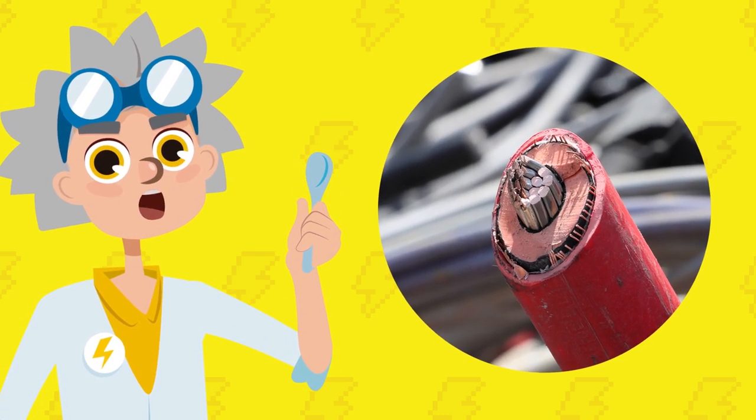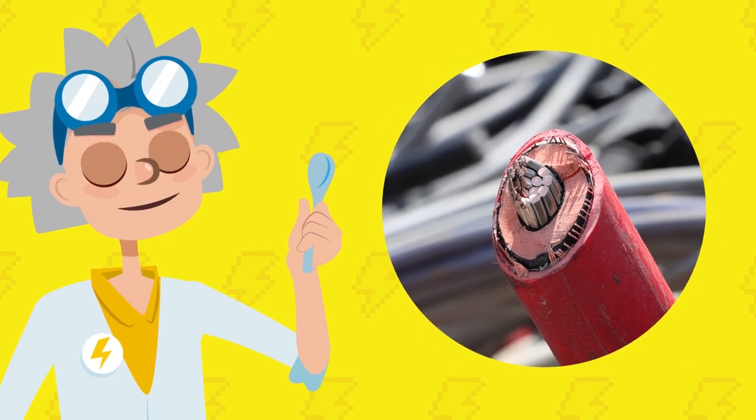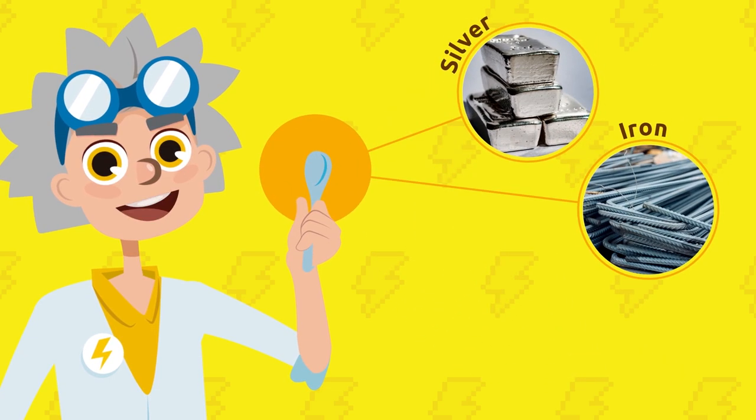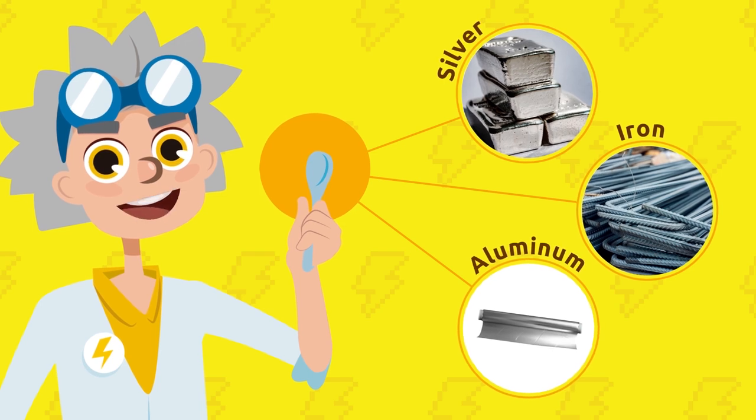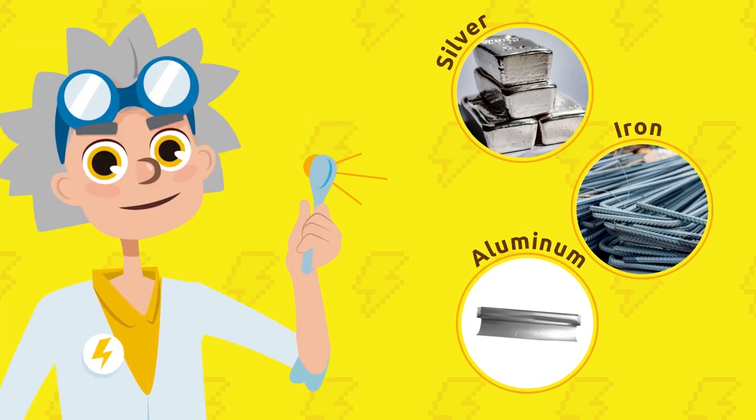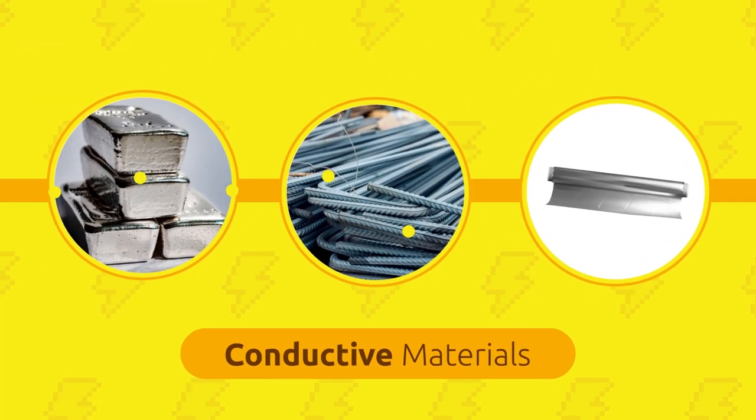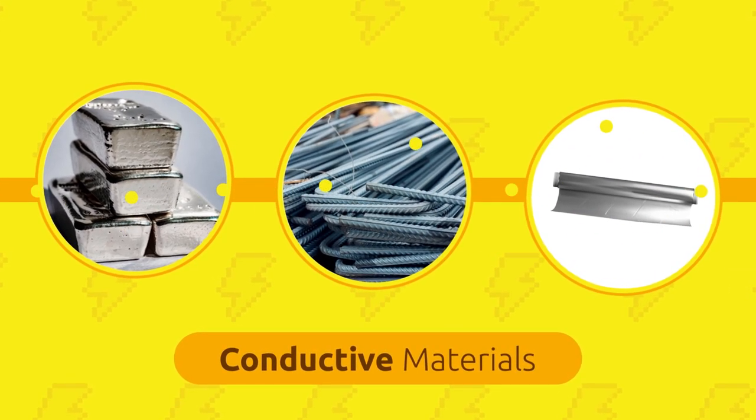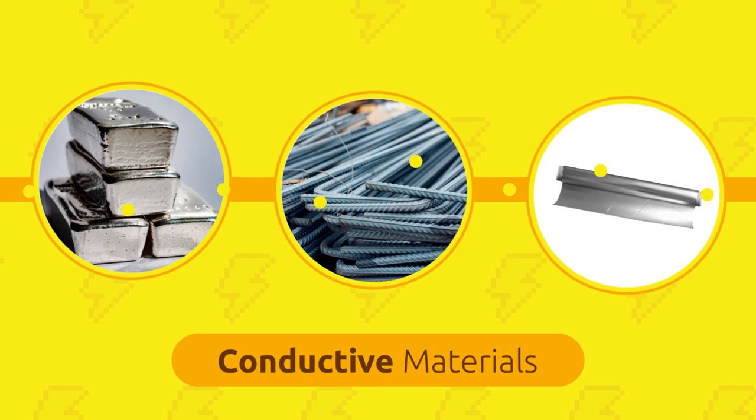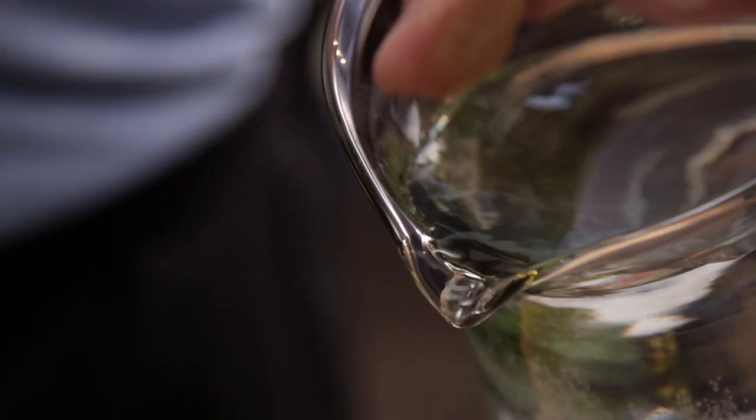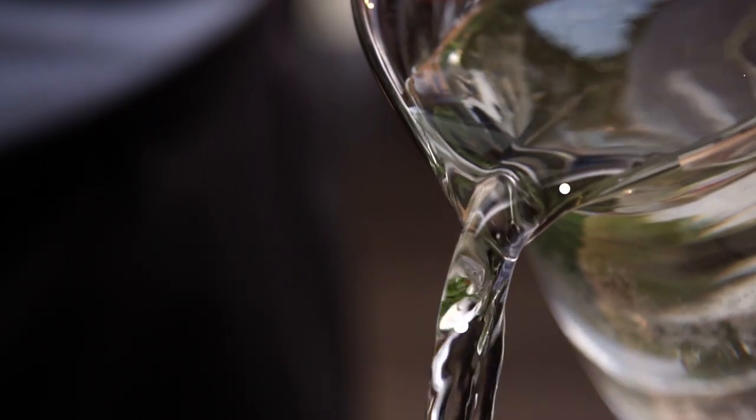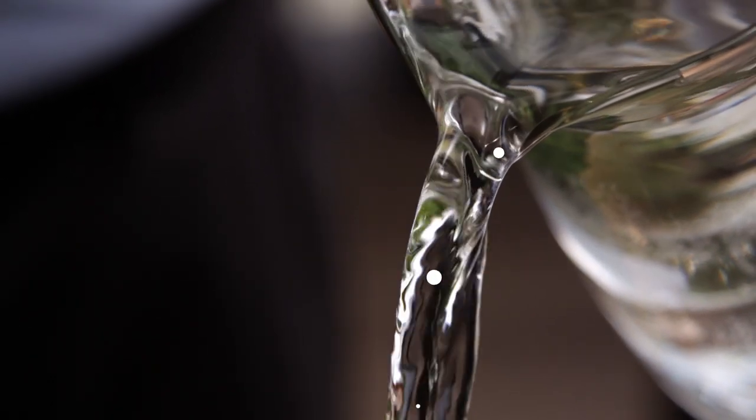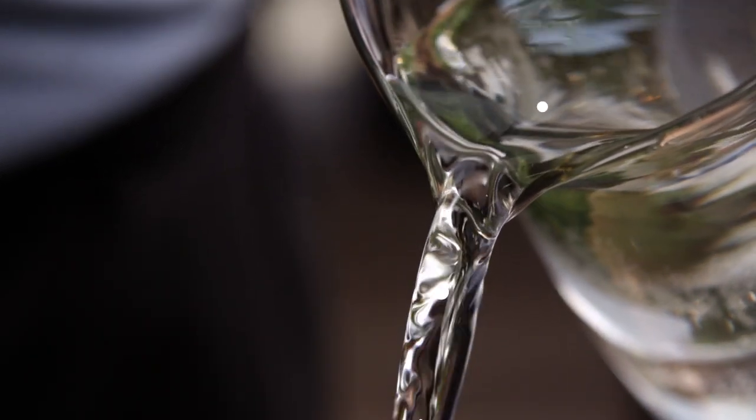Just like the copper inside the wires, this spoon is made of metal, and metal is a great conductor of electricity. Silver, iron, or aluminum are examples of conductive metals. Conductive materials allow electrical charges to flow through them and therefore are the best materials to add to an electrical circuit. But conductive materials aren't only metals—water, for example, is also a conductive material. Curious, isn't it?